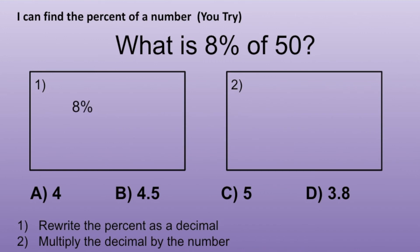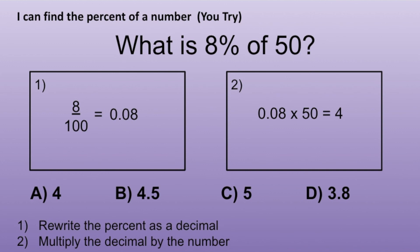Step 1 is to rewrite the percent as a decimal. So we start with 8%. We remove the percent sign and then divide by 100. 8% as a decimal is 0.08. Step 2 is to multiply the decimal by the number. 0.08 times 50 is equal to 4. So A, 4 is the correct solution.